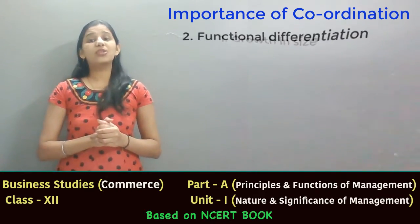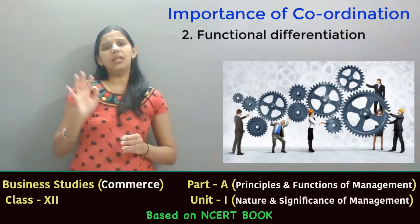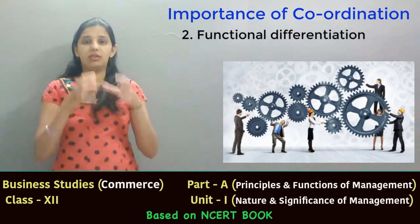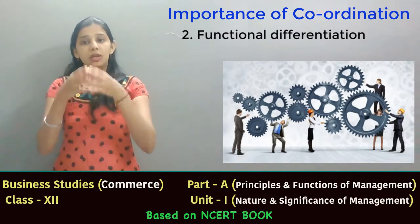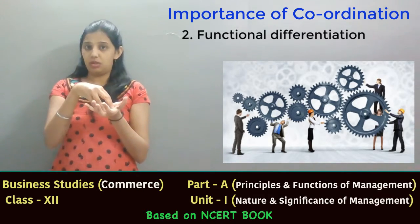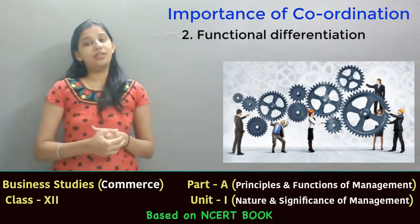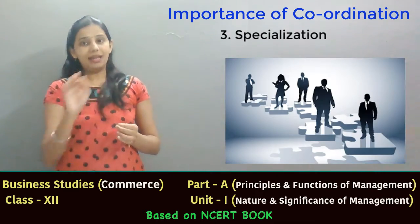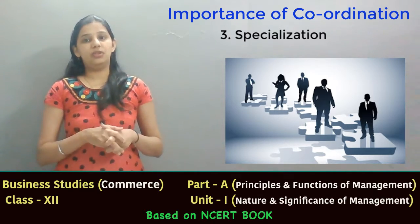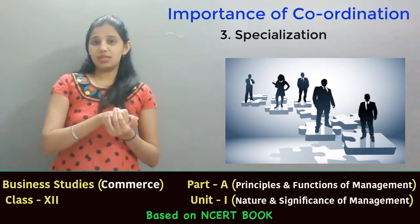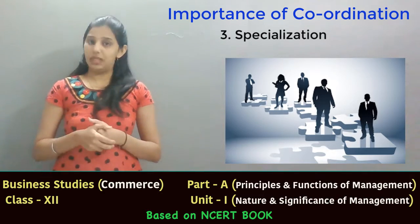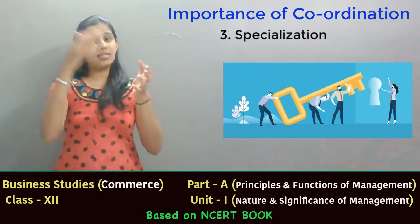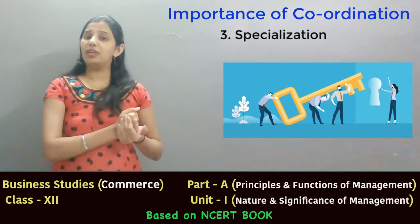The second point is functional differentiation. In an organization there are different interlinked and interrelated departments, and coordination is required to bring together the activities of these departments towards one common organizational goal. It also helps to minimize differences among departments. The third point is specialization. Since there are many specialists working in the organization, each working in their own way, this can result in chaos and misunderstanding. Coordination helps align the activities of all specialists in the right direction to achieve organizational goals.